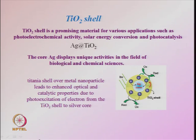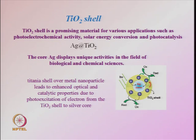In the last lecture we introduced core-shell nanostructures and discussed silica-based shells on various types of particles — metals, semiconductors, oxides and chalcogenides — and the different types of core-shell structures that can be made based on silica shells. Now, you can also have shells other than silica.